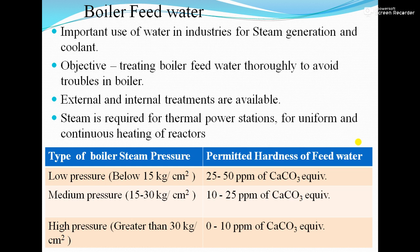Steam is required for thermal power stations for uniform and continuous heating of the reactor. There are three types of boilers: in a low pressure boiler, 25 to 50 ppm of CaCO₃ hardness is permitted; in a medium pressure boiler, 10 to 25 ppm is permitted; and in a high pressure boiler, 0 to 10 ppm of hardness is permitted.